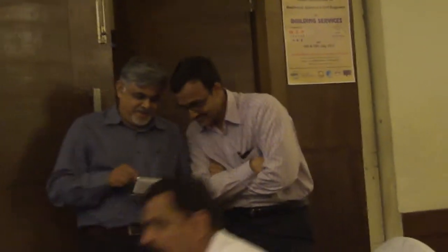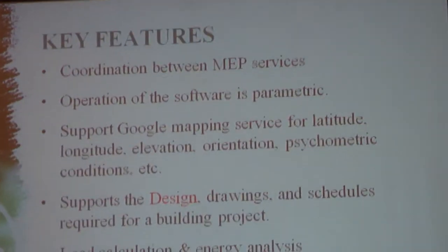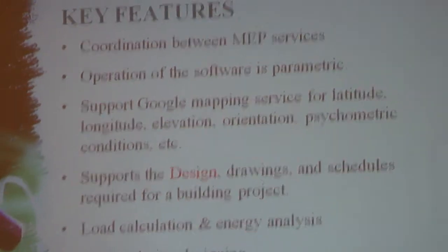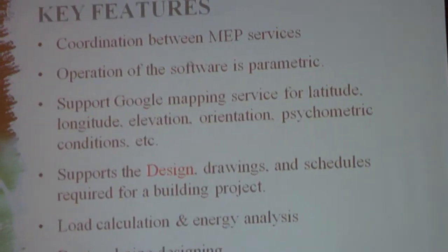Let me give some key points for this software. First, coordination between services. Second, the operation of the software is parametric — parametric means the software knows when you change any parameter, what effect it will have on other parameters. For example, if you change the flow rate in a pipe, that will affect the velocity or pressure drop, and Revit MEP knows about that and automatically changes the design.